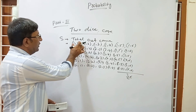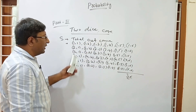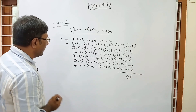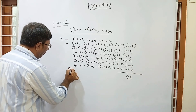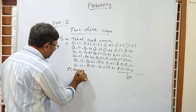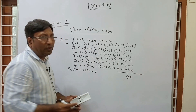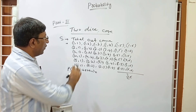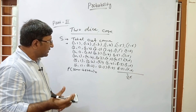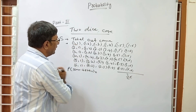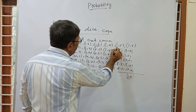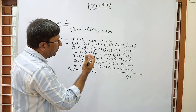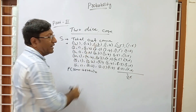When we throw 2 dice, the total outcomes are 36, because from (1,1) to (1,6) all these possibilities exist. Now the question is: what is the probability that the sum is even? Out of all 36 pairs, how many have an even sum? You see: 1+1=2 (even), 1+3=4 (even), 1+5=6 (even) — so in the first row, 3 pairs have an even sum.